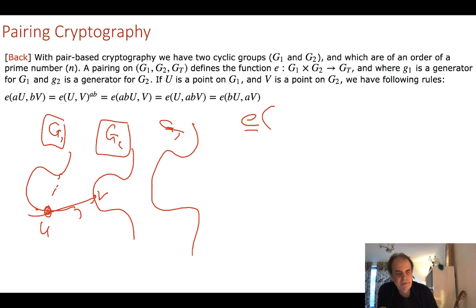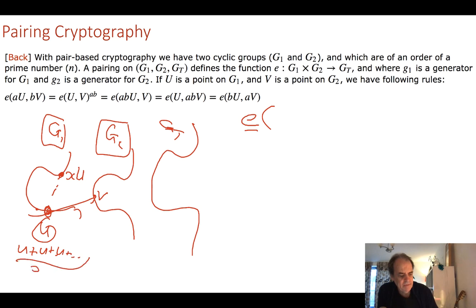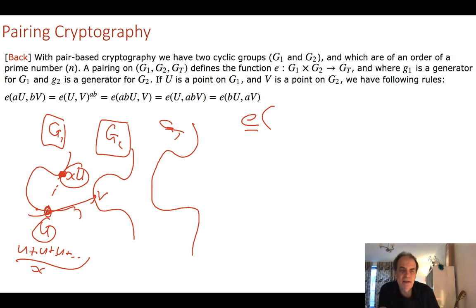In elliptic curve cryptography, we take a point and add it to itself a number of times, so that becomes x·u — we take u and add u x times to give us this point. Every time we add we get a new point on the elliptic curve, and we can keep checking but it should always give us a new point on the curve.